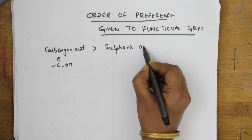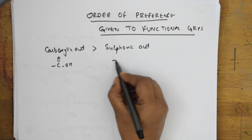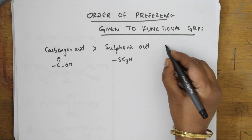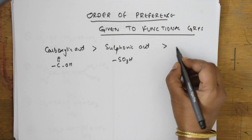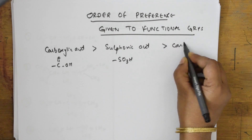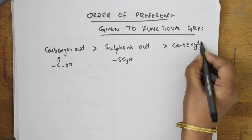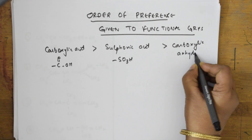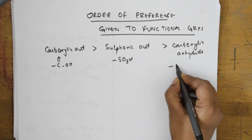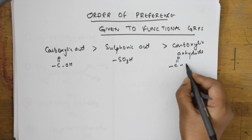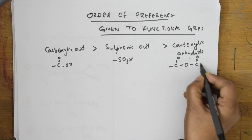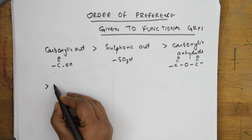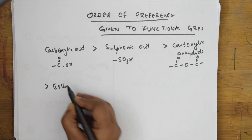The next preference is given to sulfonic acid, whose formula is SO3H. After that, the next order of preference is given to carboxylic anhydride. The formula for carboxylic anhydride is C double bond O — O — C double bond O. After that, the next preference is given to esters.